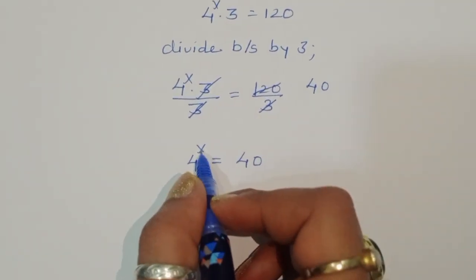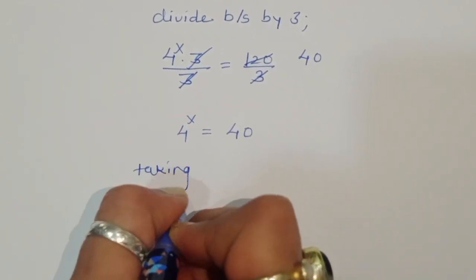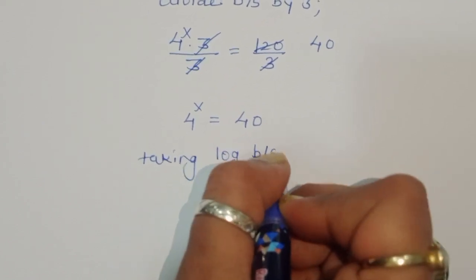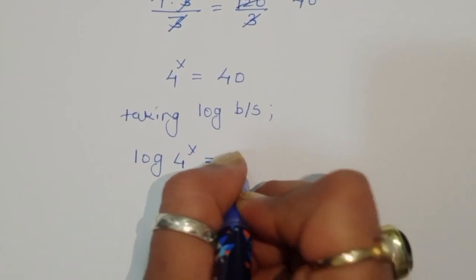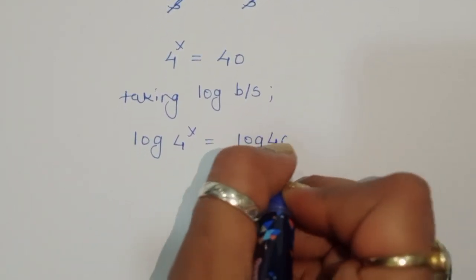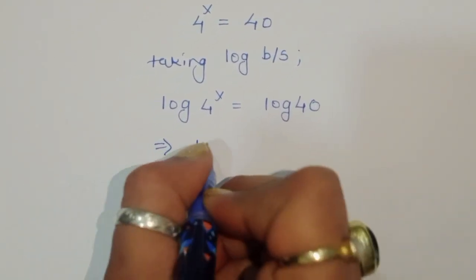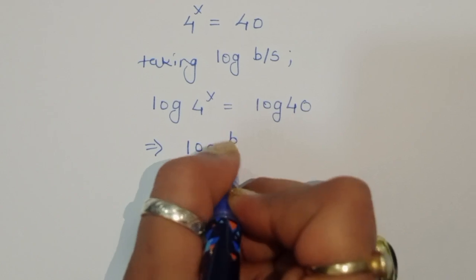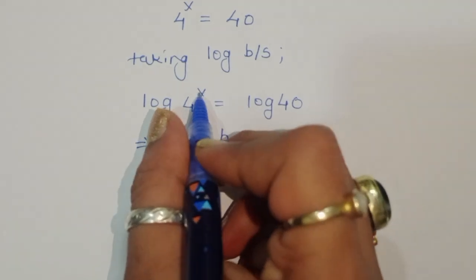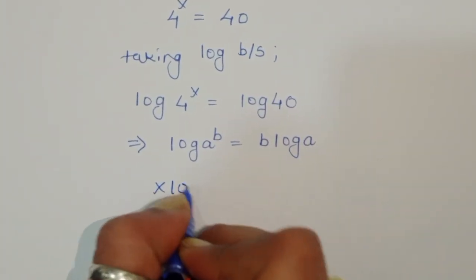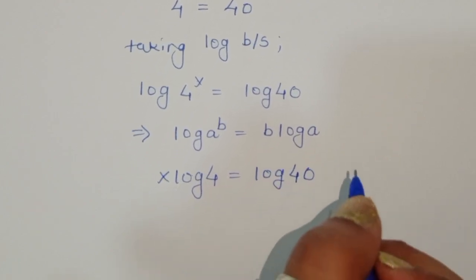Now we have to find the value of x, so we can take log on both sides. Taking log on both sides gives us log of 4 power x is equal to log of 40. For log of 4 power x, we use the formula: log of a power b equals b times log of a. Using this formula, it becomes x times log of 4 is equal to log of 40.